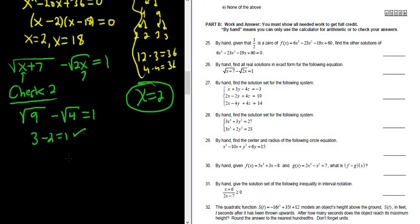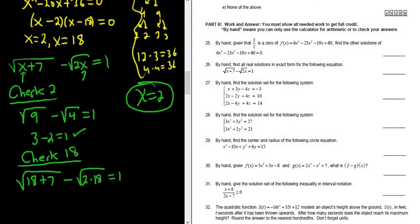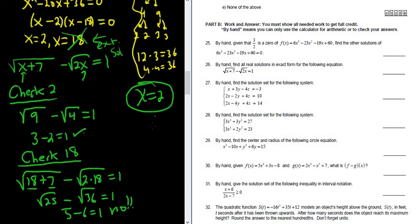Now let's check 18. I don't know if it'll work. I've never actually done this problem. So let's check 18. I have a feeling it won't. That's my guess, but let's try it. 18 plus 7 minus the square root of 2 times 18, and that should be equal to 1. So 18 plus 7 is 25, minus 2 times 18 is 36, and that should be equal to 1. So 5 minus 6 is equal to 1. No way. 5 minus 6 is negative 1, so no, fails. This one's no good. That's called an extraneous solution.